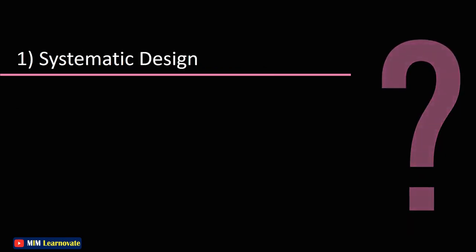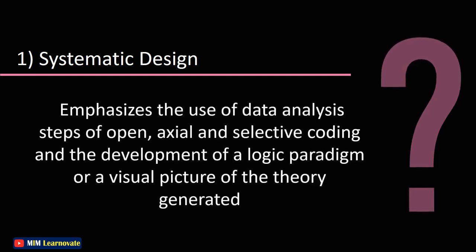What is systematic design? A systematic design in Grounded Theory emphasizes the use of data analysis steps of open, axial, and selective coding and the development of a logic paradigm or a visual picture of the theory generated. In this design three phases of coding exist: open, axial, and selective coding.